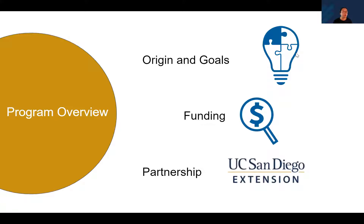Talking a little bit about program origin and goals: it came about through forums like town halls, communities of practice, and office hours. A lot of people expressed the desire to learn general accounting, to build skills in Excel, and to better communicate with faculty and PIs. The program's end goal is to provide training at a basic to intermediate level, establish foundational accounting knowledge, and provide skills for direct application to the workplace to meet UC San Diego financial needs.